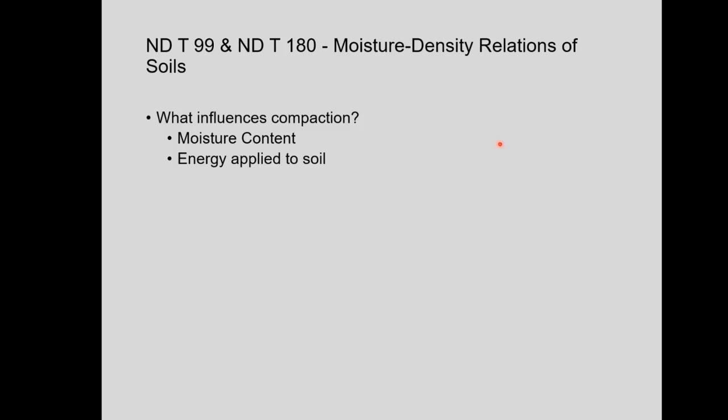What influences compaction? Probably the two things that stand out most are the moisture content of the soil you're trying to compact, and the energy or work put into it. If soil is completely dry, it's very hard to compact — like dry sand at the beach that you can't build a sandcastle with. And you can't do it if it's too wet either. If it's just right, you can do it.